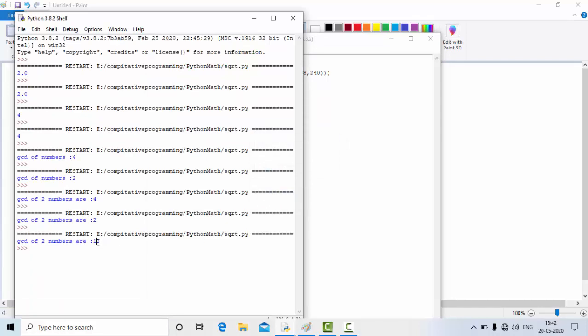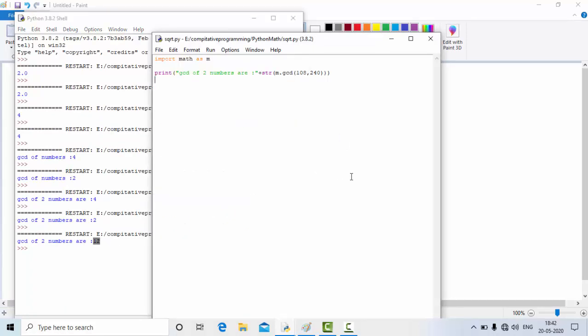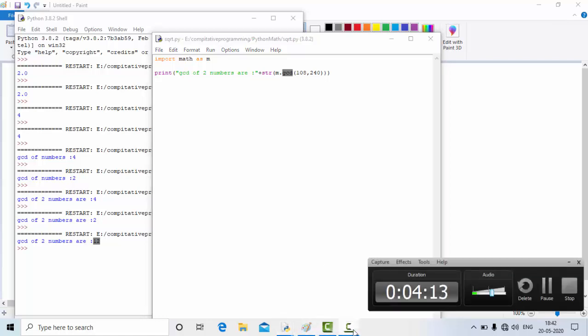Like this, we can calculate the GCD of any two numbers using math library and using the function called gcd. I hope it's informative for you guys. If you have any doubt, let me know in the comment section, and please do follow other tutorials in this playlist on math library Python. Subscribe to my channel for more tutorials like this. Thank you so much for watching.